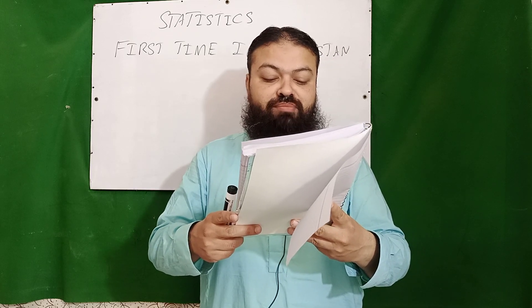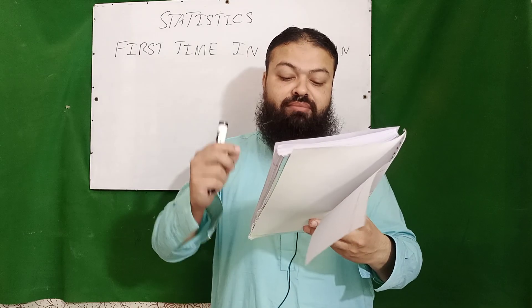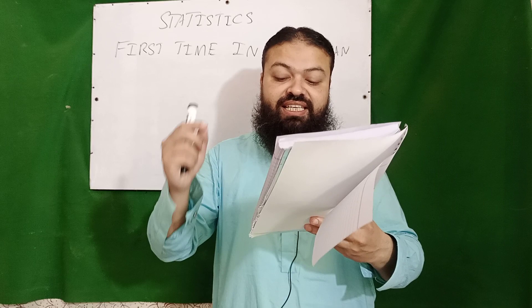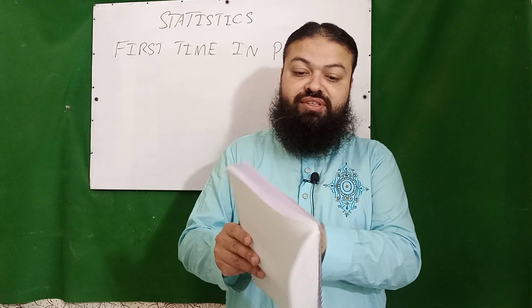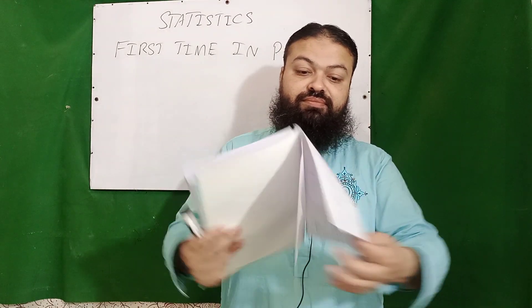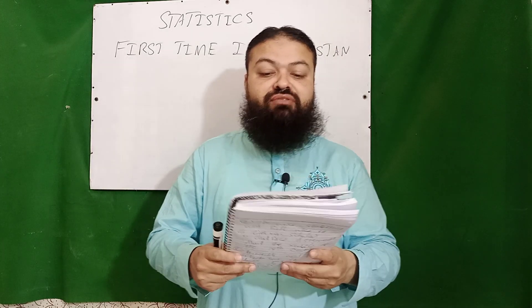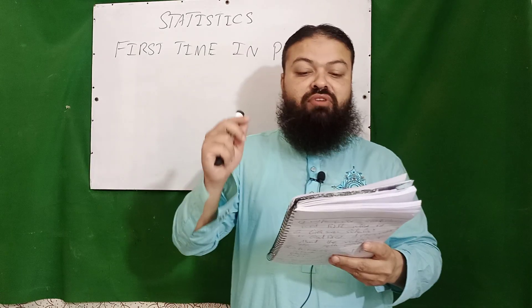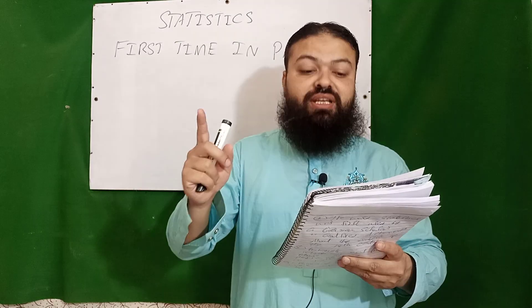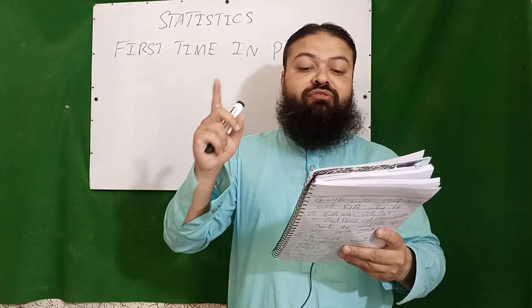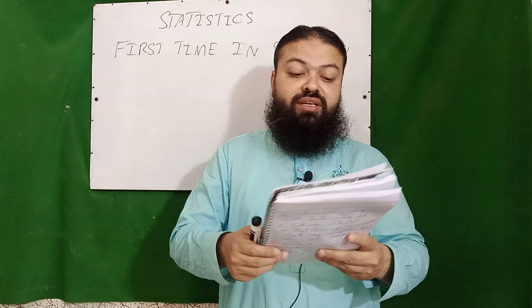Question number three: T distribution was introduced by W.S. Gosset — William Seeley Gosset — in 1908. Question number four: the term regression was first introduced by English biometrician Sir Francis Galton.